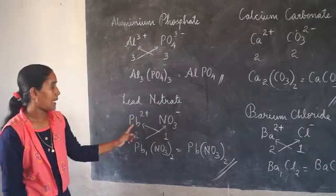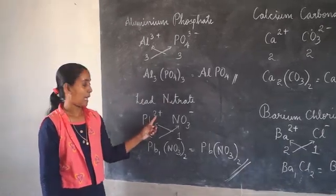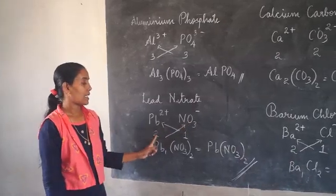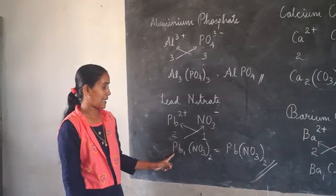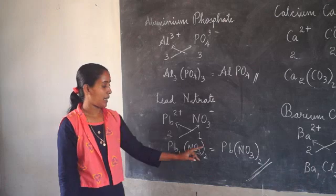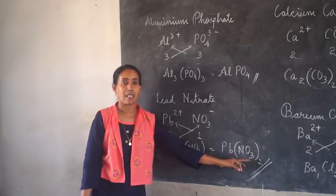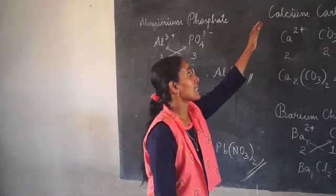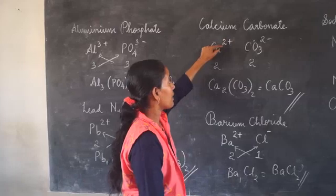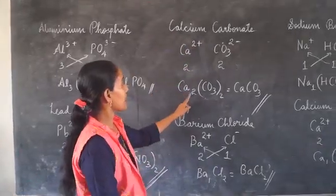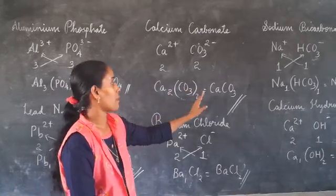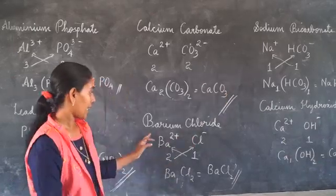Next example: lead nitrate. Lead is Pb2 plus and nitrate is NO3 minus. The valency of lead is 2 and the valency of nitrate is 1. Interchanging the valencies gives Pb1 NO3 2. Since 1 does not need to be written, the formula is Pb(NO3)2 — lead nitrate. Next: calcium carbonate. Calcium is Ca2 plus and carbonate is CO3 2 minus. The valencies of both ions are 2. Since both valencies are the same, the formula is CaCO3.